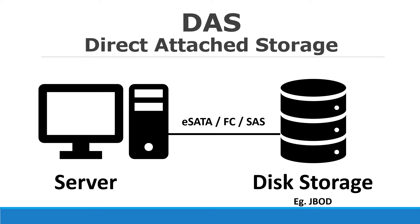DAS stands for Direct Attached Storage. In DAS you have just a bunch of disks, called JBOD (Just a Bunch Of Disks), held together in an enclosure with no intelligence and no controller. It is attached to the server directly. The storage connects to the server and communicates using various protocols such as ATA, SATA, eSATA, SCSI, FC (Fibre Channel), or SAS.